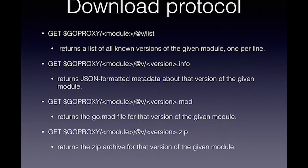The protocol itself is very simple — this is actually all the calls in the protocol. First you get a list of all the versions for a given module, with the module as part of the URL. Then you can get information about a specific version. The most useful is the last one, which gives you the version as a zip file — a zip archive. That's where the speedup comes from: instead of having to do a git checkout, it can just get everything as one zip file.